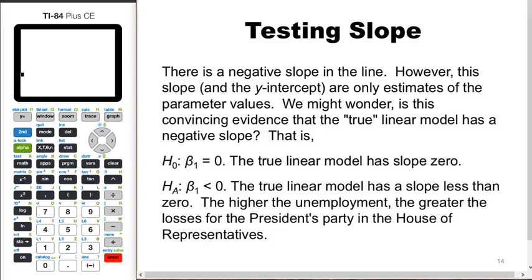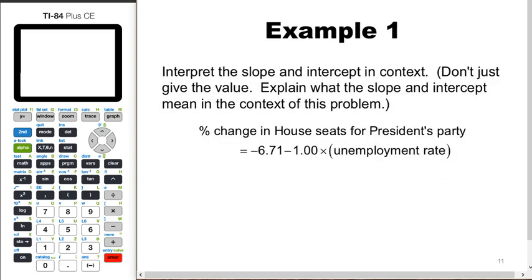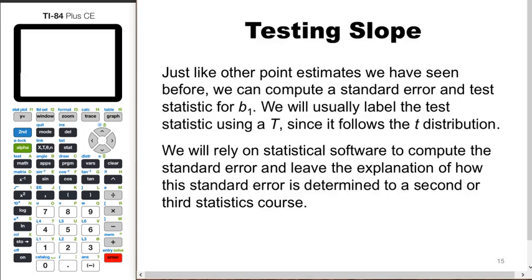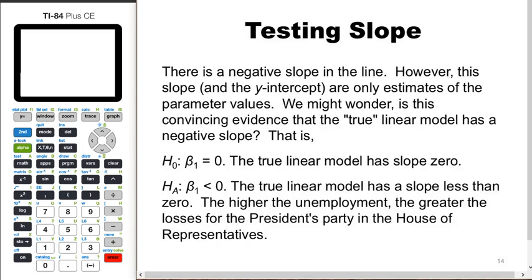Going back to the third equation: the percent change in house seats for the president's party equals negative 6.71 minus 1.00 times the unemployment rate. The slope is negative. There is a negative slope in the line, however this slope and the y-intercept are only estimates of the parameter values. We haven't looked at every single possible election — past, present, or future — we basically just have a sample.